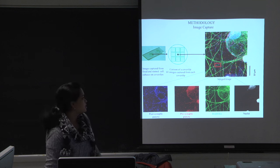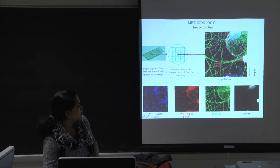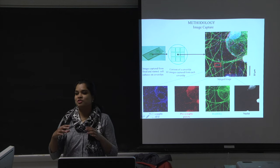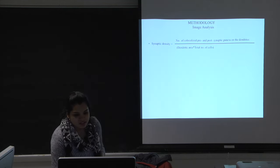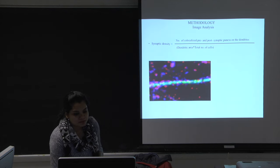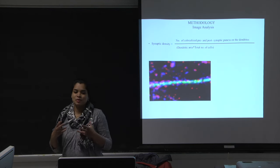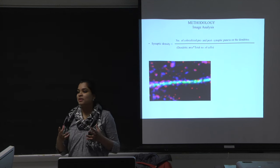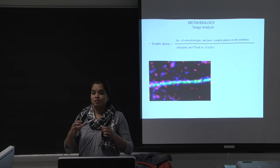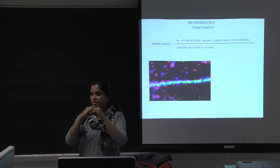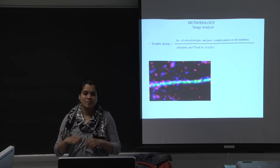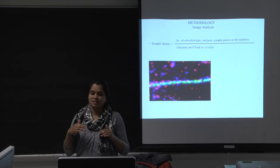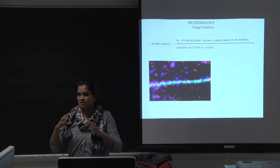I'm going to zoom into a small red rectangular region to explain how I performed image analysis. I specifically wanted to quantify the count of synapses in terms of synaptic density — counting the number of co-localized pre- and post-synaptic puncta which form the synapse, then normalizing by the total dendritic area and the total number of cells within the image.